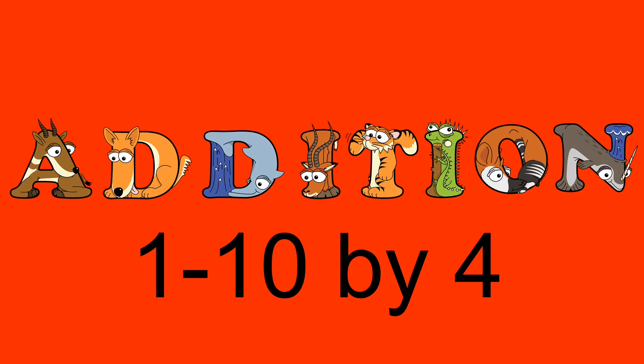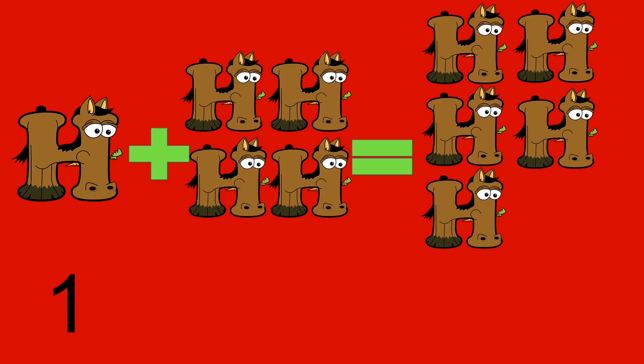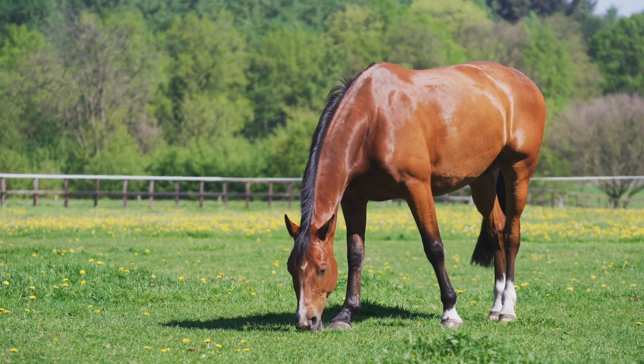Addition one to ten by four. One horse plus four horses equals five horses. One plus four equals five. Horse.